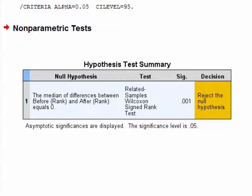Before that though, let's work through this hypothesis test summary table. So here we can see that a related samples Wilcoxon signed rank test was run, and the null hypothesis for this test was that the median of differences between the before and after rankings is equal to zero.